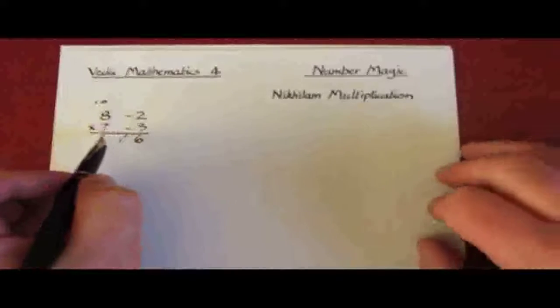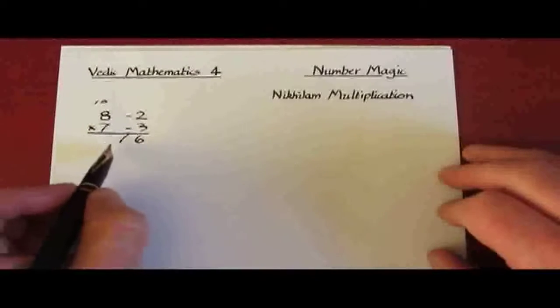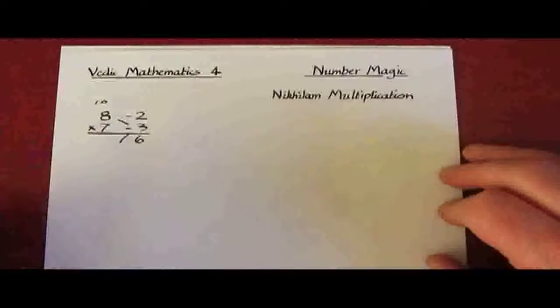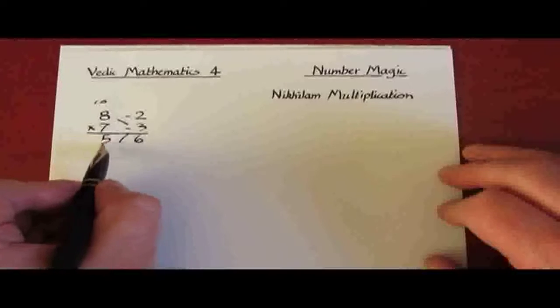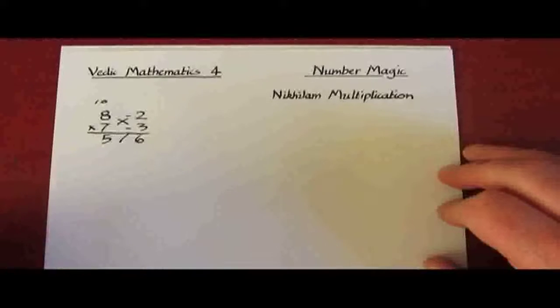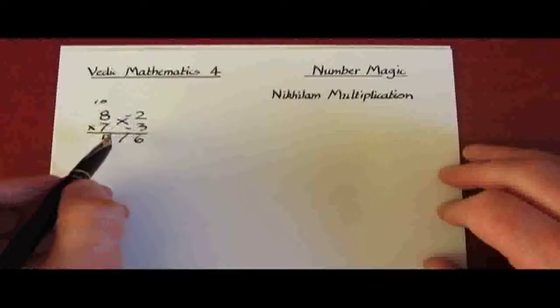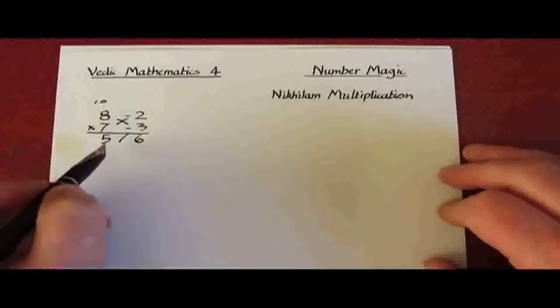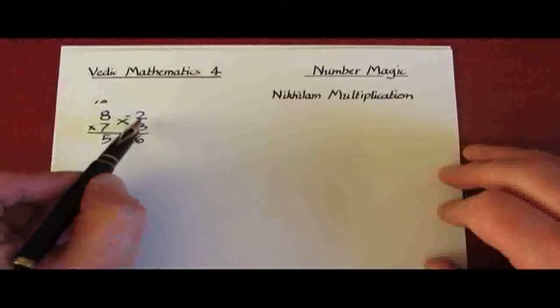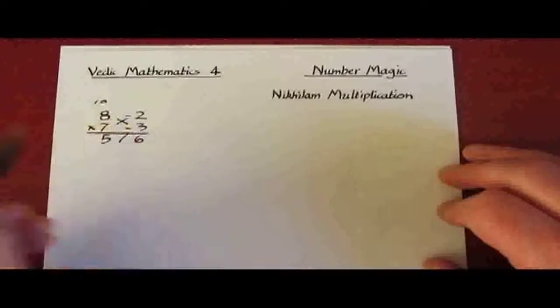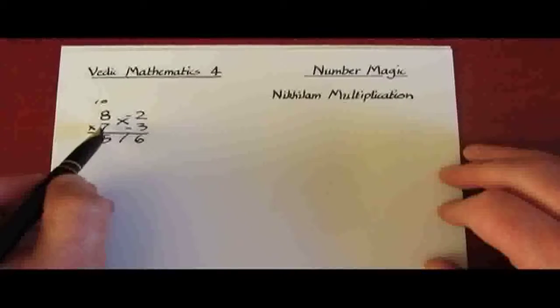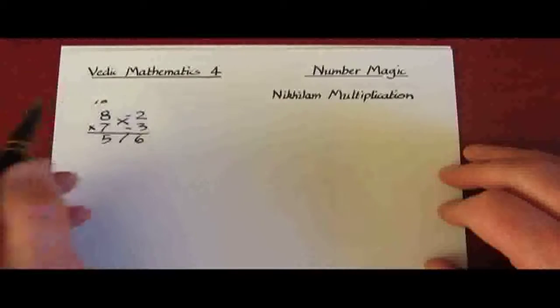And for the left there are one of four methods to get the answer digit here. The first is to cross subtract 8 take away 3, and that gives 5. The second is to cross subtract the other way, 7 minus 2, that also gives 5. In practice most people use the cross subtraction method to obtain that digit, but the two other methods are these: you could take the base 10 and subtract the two deficiencies, 10 take away 2 and take away 3 leaves 5. Or you can add the two numbers to be multiplied, 8 plus 7 gives 15, and then take away the base 10 leaving 5.